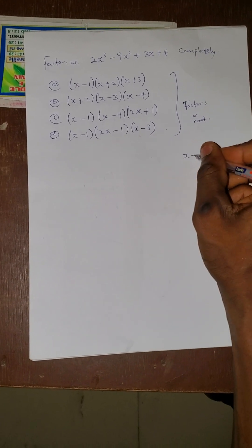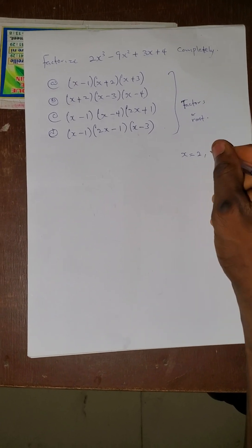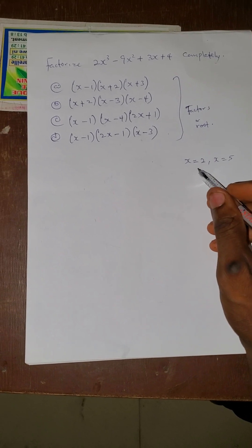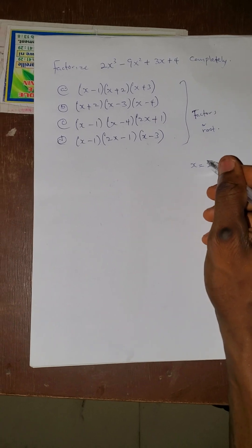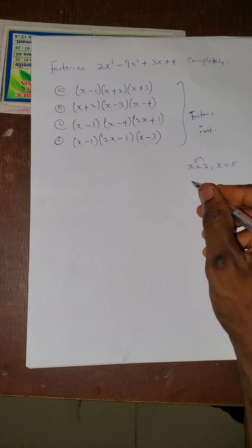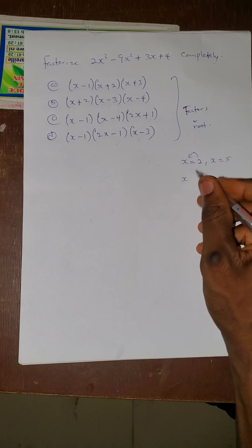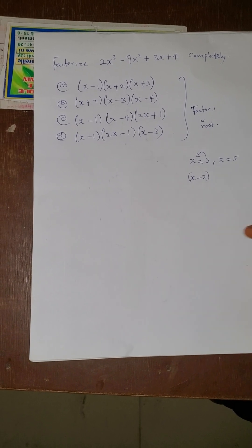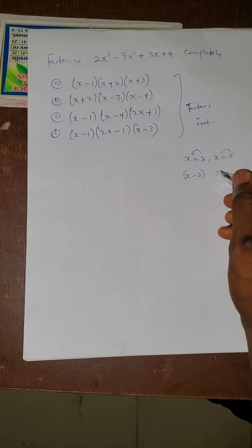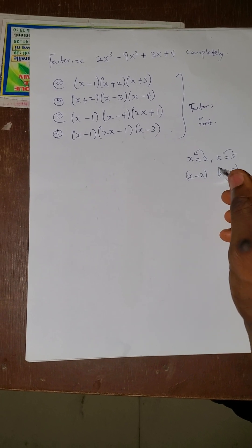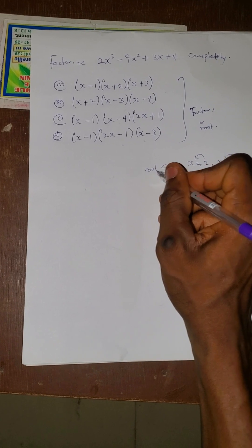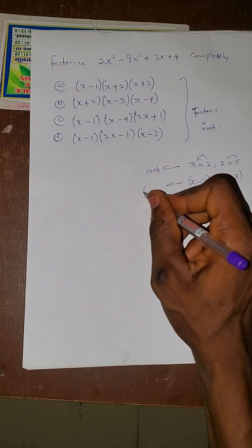Let me explain. If you have your answer as x equals 2 and x equals 5, those are roots. If you want to convert a root to a factor, you take it inside. So the root x=2 becomes the factor (x minus 2) equals 0, and x=5 becomes (x minus 5) equals 0. So those are roots, and these are the corresponding factors.